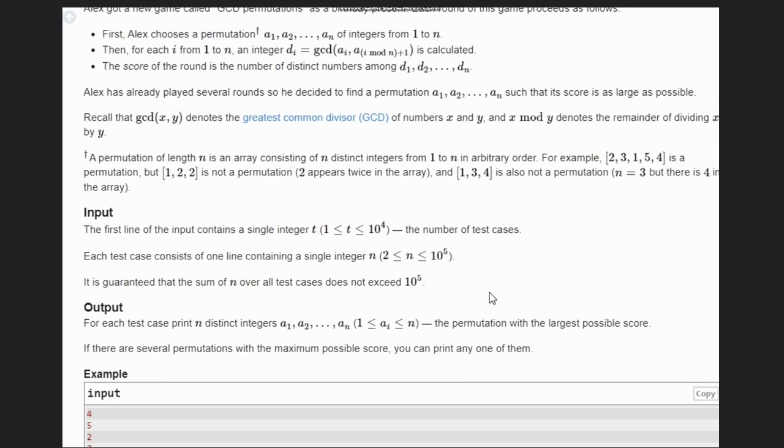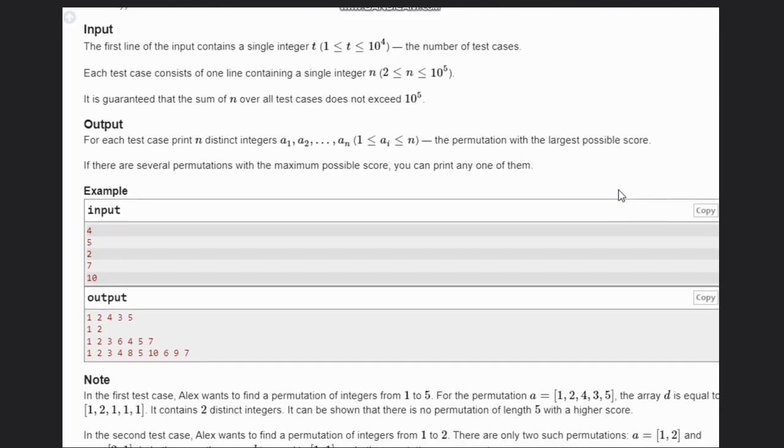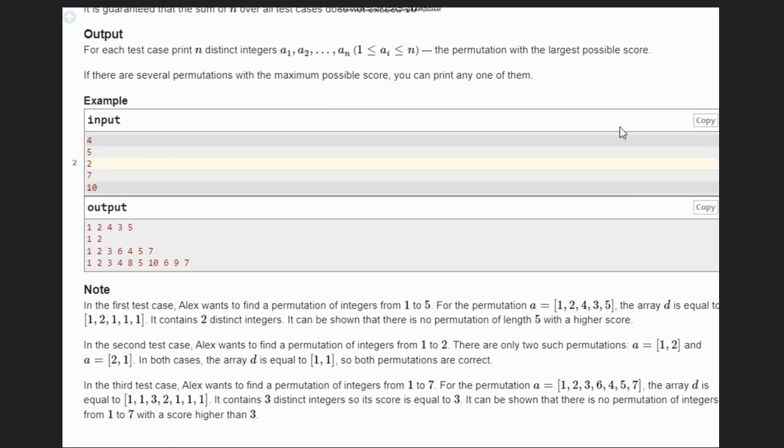You should know what is GCD and what is permutation. GCD is the greatest common divisor, and permutation means there should not be a repetitive number. There must be only one occurrence of each number, and that will be from 1 to n.